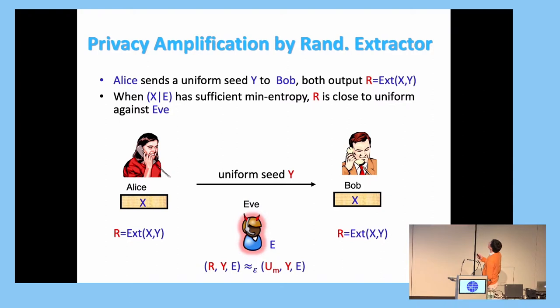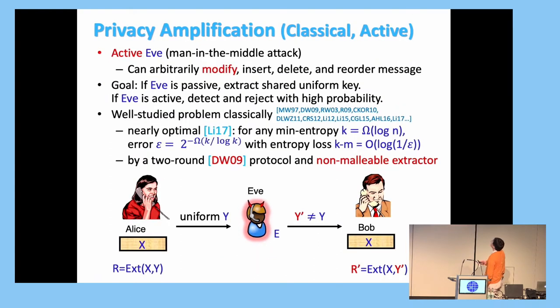So how do these two do passive privacy identification? Well, Alice just passes the random seed Y to Bob. So because they both output extractor output of X, with respect to Y as a random seed. And because the random seed is still random conditioned on Y being known, so the extracted output will be random with respect to Y even known. And what about active adversary? Well, active adversary can change Y to some Y' not equal to Y. So this breaks the previous construction.